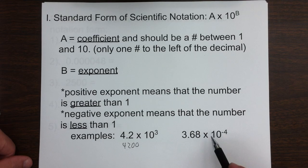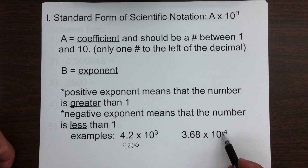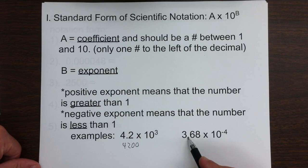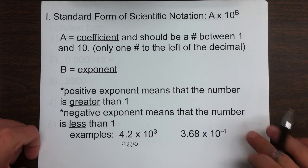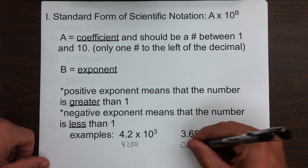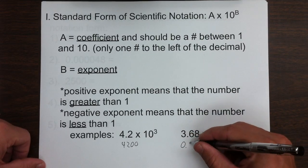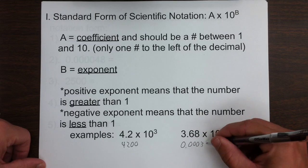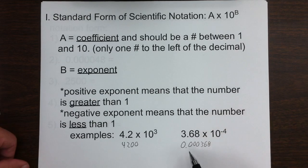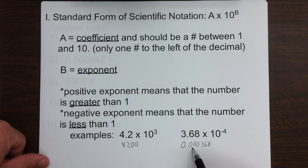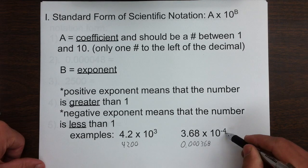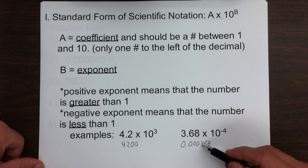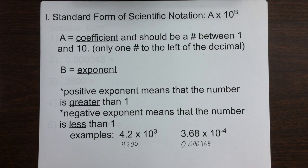However, over here we have a negative exponent, so this number will be less than 1. We move the decimal one place to get beside the 3, and then we still have three more places to move it, so this would be 0.000368. Notice we've moved the decimal four places, and that corresponds with the 4, and the negative means it's less than 1.